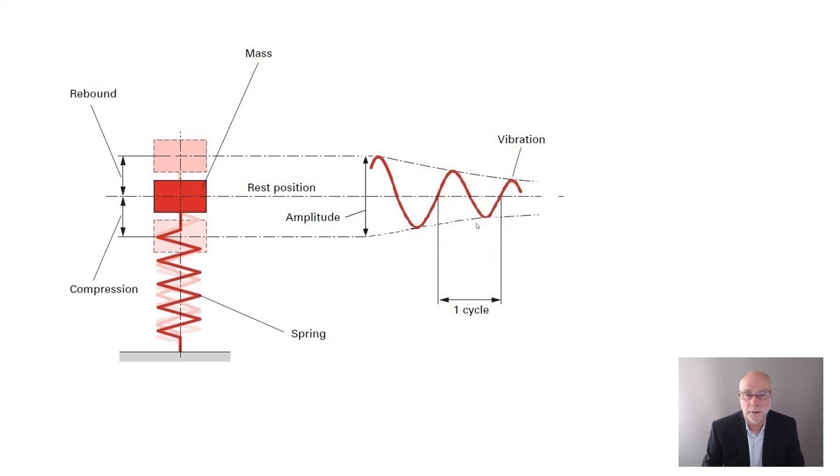And if it's one cycle going up and down per second, we call that one hertz. If it goes up and down twice in a second, we call that two hertz. So hertz is cycles per second.